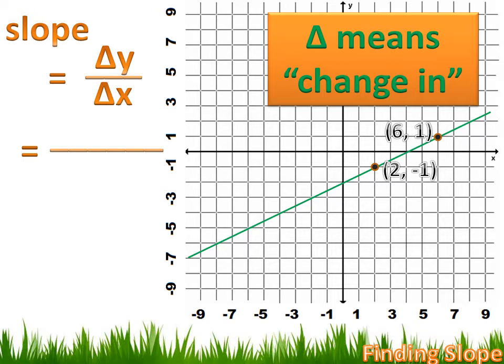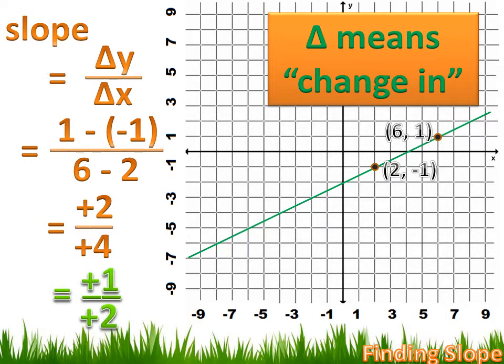You can start from either point and go to the other, but you need to be consistent — if you start with your y values from one point, you have to use that same point for your x values. Let's start with the higher point and subtract: the change in y is 1 minus (−1), and the change in x is 6 minus 2. One minus minus one is the same as one plus one, or two. So that's two over four, which equals one-half — the same slope we got with rise over run.